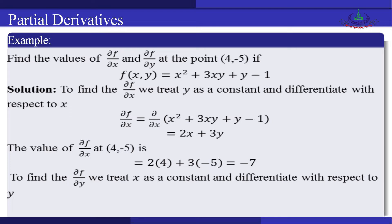So ∂f/∂x = ∂/∂x (x² + 3xy + y − 1), which gives us 2x + 3y, because the other terms in y and constants have partial derivative equal to 0. Therefore the value of ∂f/∂x at the point (4, −5) is 2(4) + 3(−5) = −7.